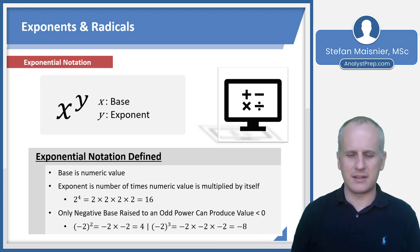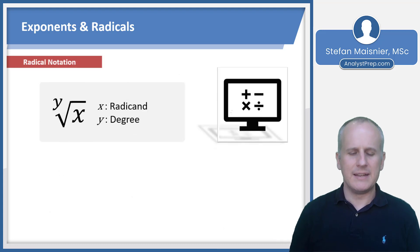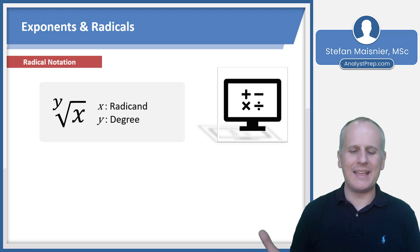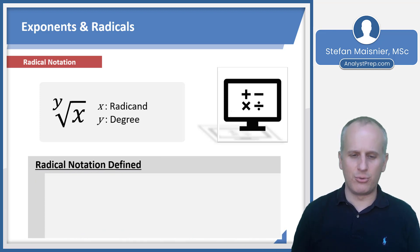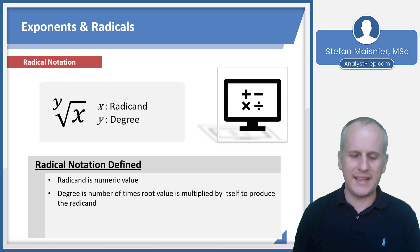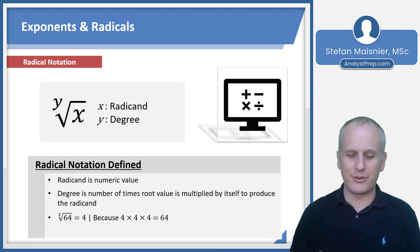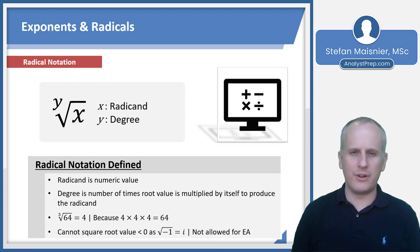Now let's talk about radical notation. The x under the radical symbol is known as the radicand — the part being rooted — and the y is the degree. If there is no degree shown, you have a square root. The degree is the number of times the root value is multiplied by itself to produce the radicand. For example, the cube root of 64 equals four, because 4×4×4 = 64.